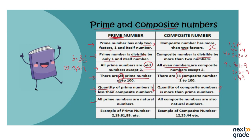All prime numbers are natural numbers and all composite numbers are also natural numbers. Examples of prime numbers are two, nineteen, sixty-one, and eighty-nine — all divisible by only two factors. Examples of composite numbers are twelve, twenty-five, forty-four, and so on, all having more than two factors.